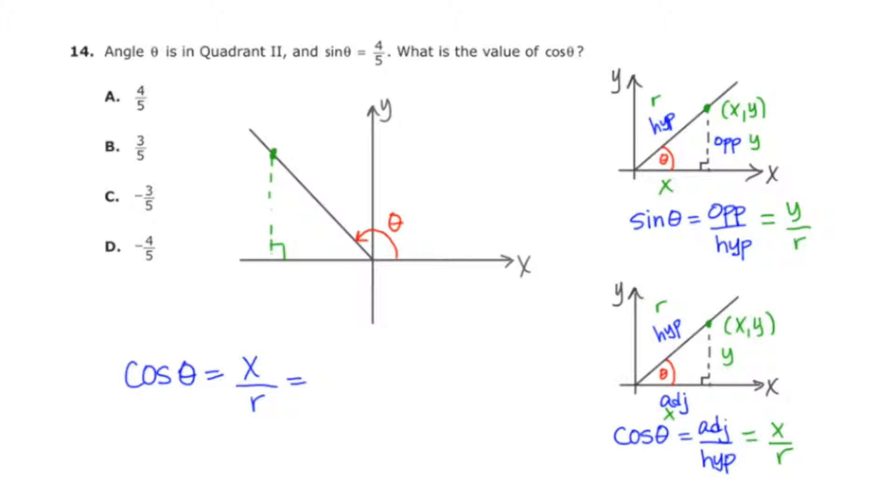Now it tells us from the given that the sine is 4 over 5. And if we think of sine in this new way as y over r, we know that the y component is going to be 4 and that the r component is going to be 5. So I can label the triangle accordingly.